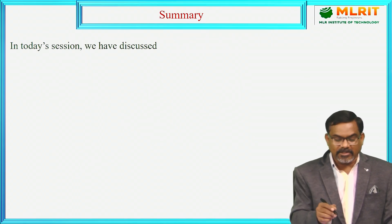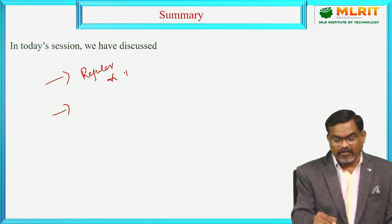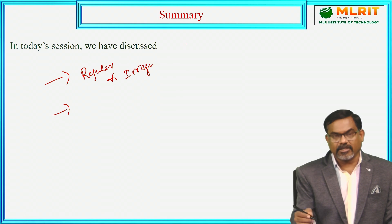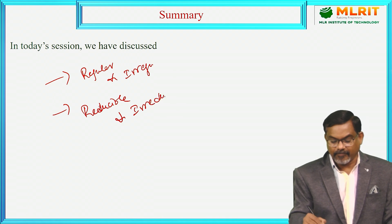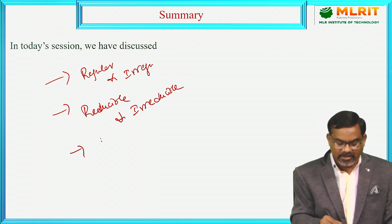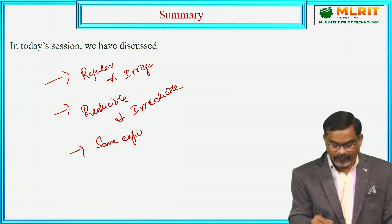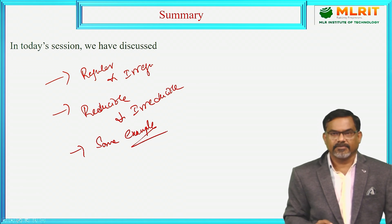So in today's session, I have introduced regular and irregular stochastic processes, similarly reducible and irreducible stochastic processes, and we have discussed some examples also. This is for today's session and we will meet in the next session. Thank you very much.